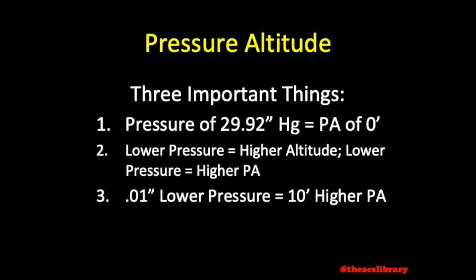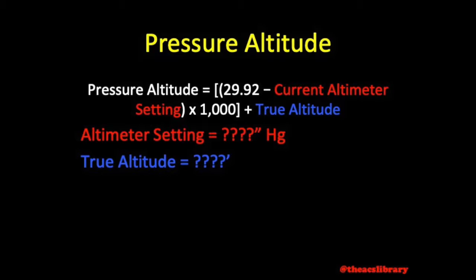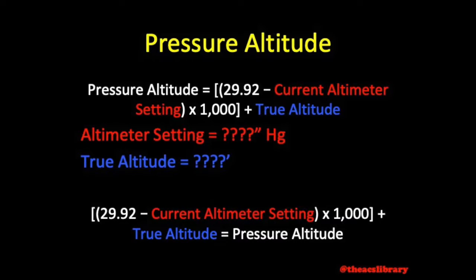We will find pressure altitude based on the nearest available altimeter setting using the formula shown. We will find our altimeter setting in the nearest METAR or ATIS, and our true altitude based on the performance calculation being performed. Pressure altitude equals 29.92 minus current altimeter setting, all times 1,000, plus true altitude.